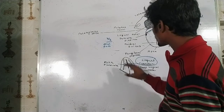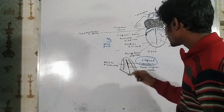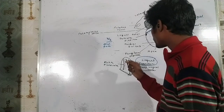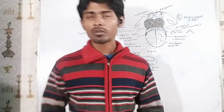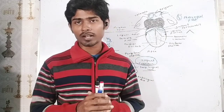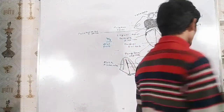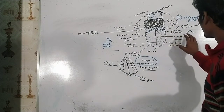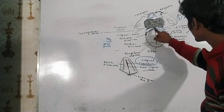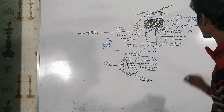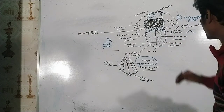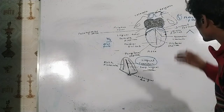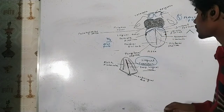No papillae are present on the ventral surface of the tongue, which means there is no taste perception — no taste buds. Now, the dorsal surface of the tongue is divided into two parts by an inverted V-shaped furrow called the sulcus terminalis. The posterior one-third part is called the pharyngeal part, and the anterior two-thirds is called the oral part.